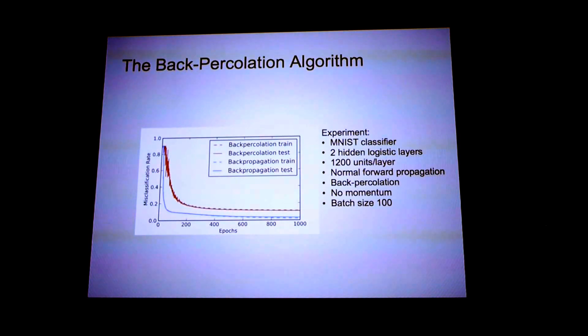But one thing to note is that if you turn the learning rate down to a very small value, it's going to be exactly the same as back propagation. And this is interesting because a lot of the argument against the biological plausibility of back propagation is that you can't transmit very small, real values. And back percolation might be a way of getting around this.